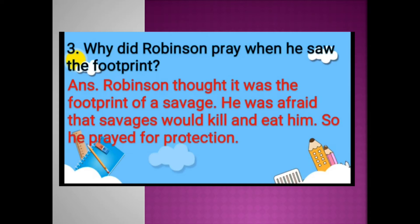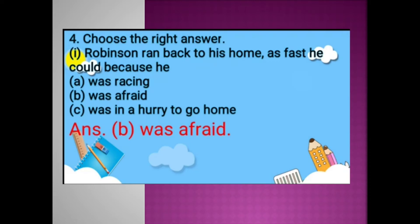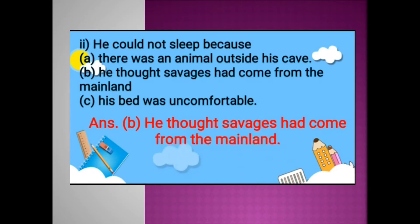So we know that 'savage' means the wild one. He thought that the print was that of a savage and he prayed for protection. Next, choose the correct answer: Robinson ran back to his home as fast as he could because — option A: was racing, option B: was afraid, option C: was in a hurry to go home. Yes, obviously option B: was afraid. Next: He could not sleep because...